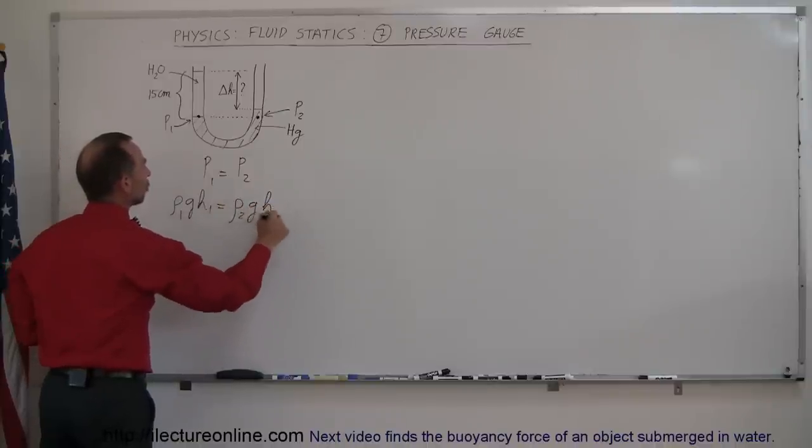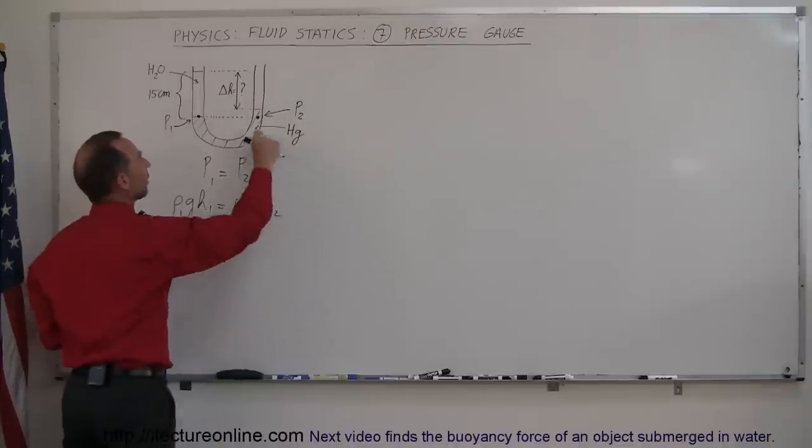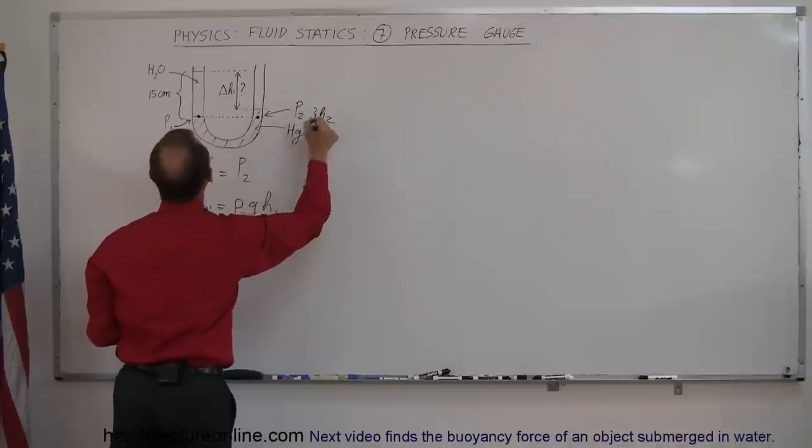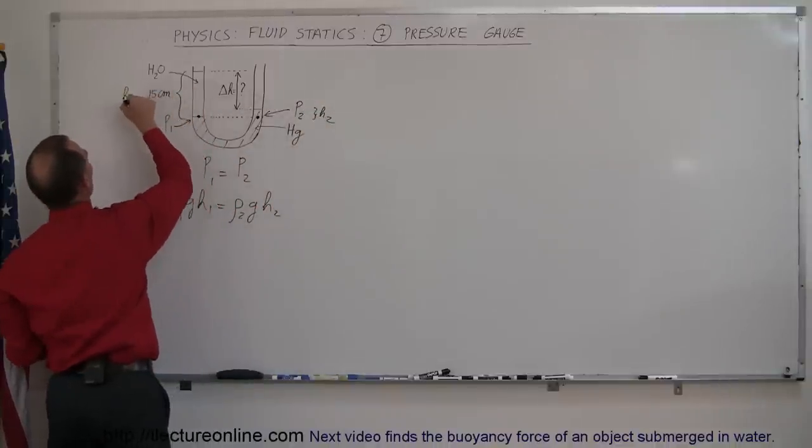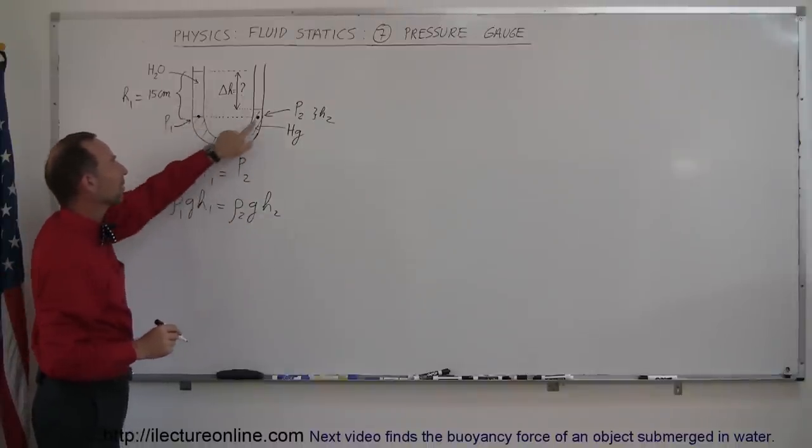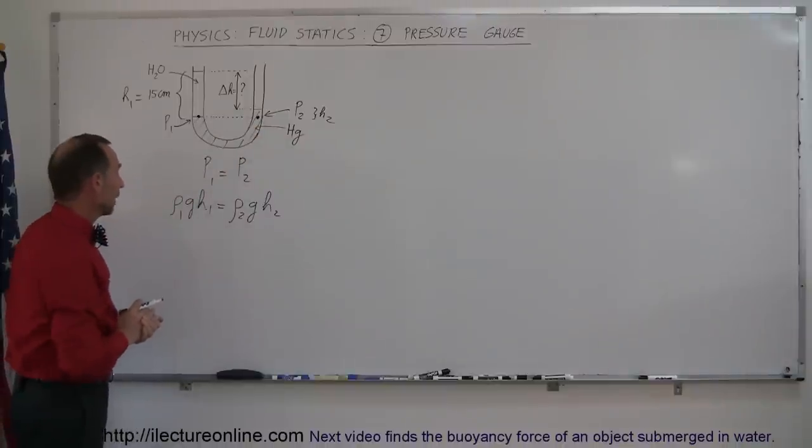So this right here could be considered h2 and this then would be considered h1, and then density 1 represents the density of water and density 2 represents the density of mercury.